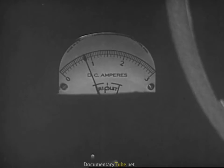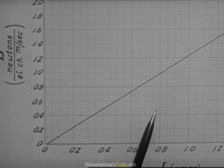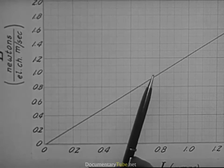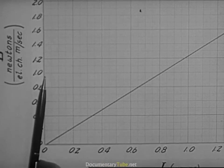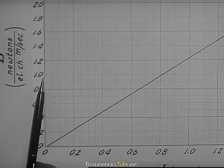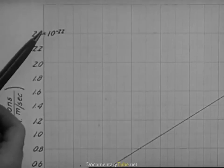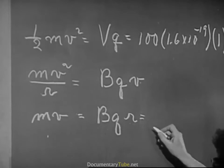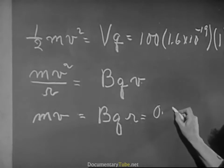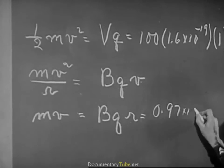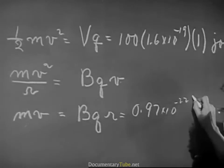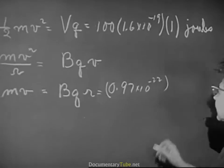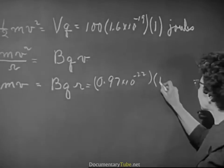The current in the coils is 0.79 amperes. That gives, for the field, 0.97 times 10 to the minus 22. So we have this value for the field, and Q is still 1.